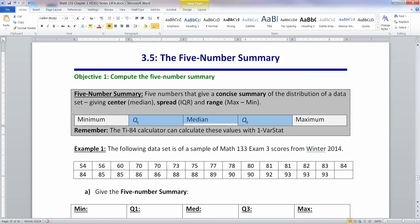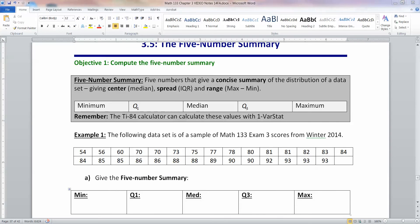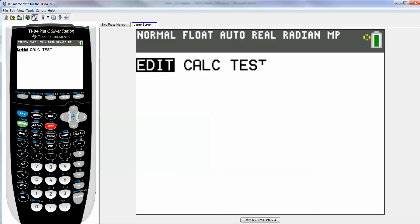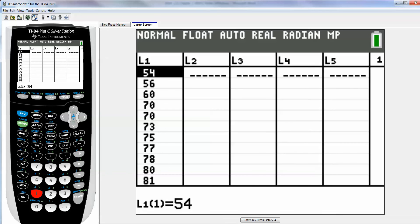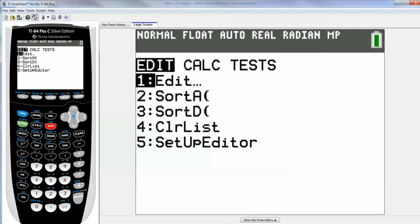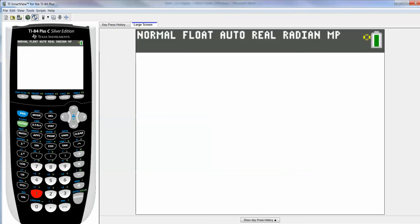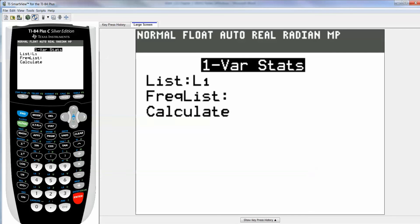The TI-84 calculator can calculate these values with the one variable stats. So when we go to stat, edit, there's all the data points. And then I go to stat, calculate number one, go down to calculate, enter.